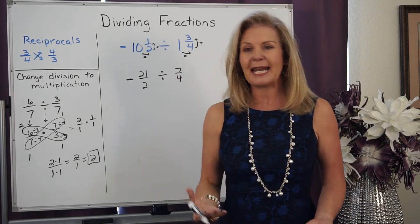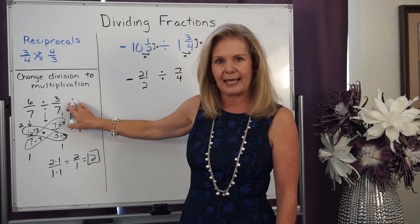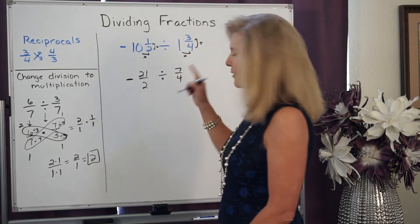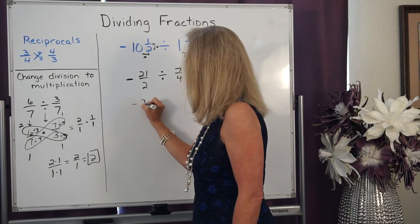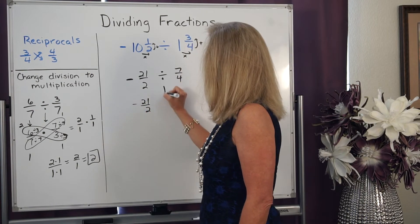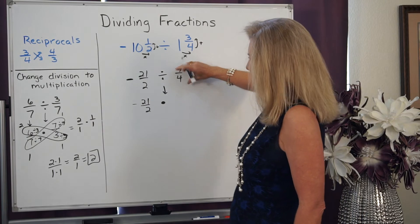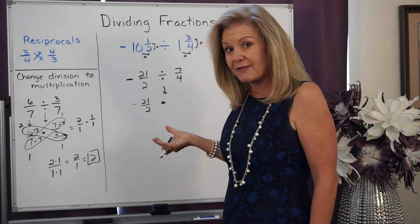Once I've rewritten it, then I go back and I change it from a division problem to a multiplication problem. So the first number always stays the same. I'm going to switch that sign from division to multiplication. I'm going to take the reciprocal of the second one.